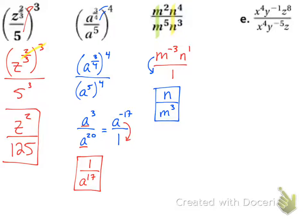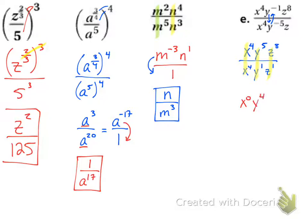This next one — I want to move my negative exponents first. I'm going to move the y on the top down and the y on the bottom up. On the top I have x to the 4th, y to the 5th, z to the 8th. On the bottom I have x to the 4th, y to the 1st, and z — I can write an invisible 1 there to make sure I subtract correctly. I can then divide like terms: x's, y's, and z's. I get x to the 0, y to the 4th, z to the 7th. Since x to the 0 equals 1, my final answer is y to the 4th times z to the 7th.